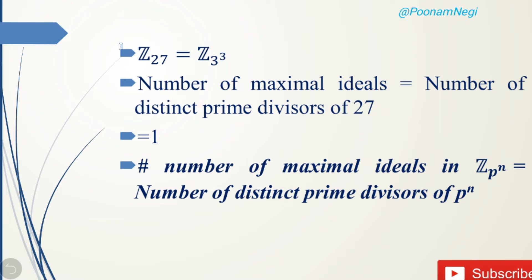The number of maximal ideals in any Z_(p^n) equals the number of distinct prime factors of p^n. In this case, the number of maximal ideals will be the number of distinct prime factors